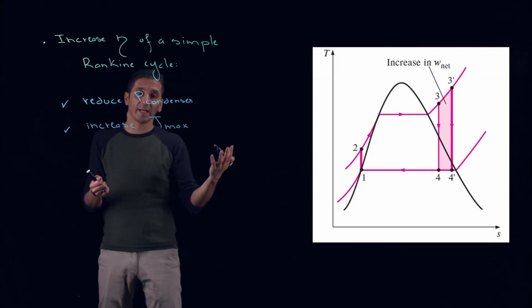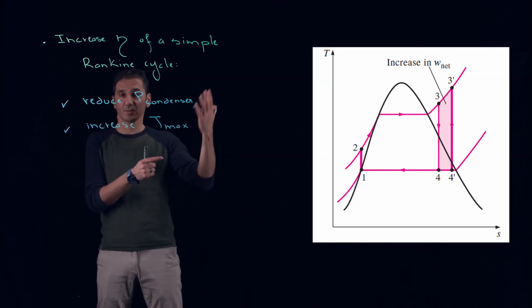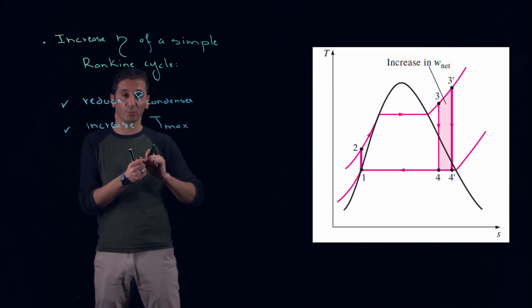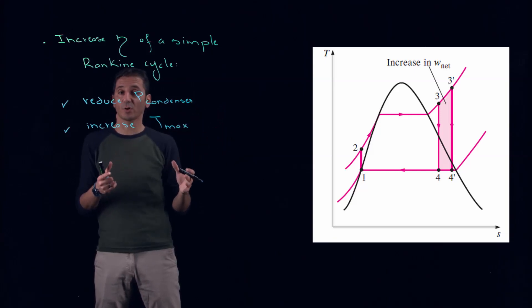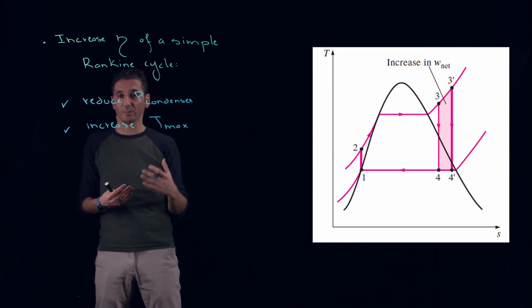Because we know that Carnot efficiency is 1 minus TL over TH, and it's telling us that for a constant TL, if you maximize TH, therefore your allowable maximal efficiency will go up.